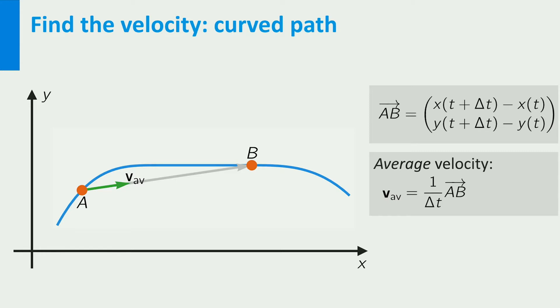But what is the exact velocity at time t? Well, the idea is that the smaller we take Δt, the better the average velocity approximates the actual velocity at time t. When we take the limit of Δt to zero, the average velocity vector becomes the velocity vector of the box at point A. And as you can see, this vector is tangent to the path at A. And this makes sense, of course, the box moves in the direction of the path.